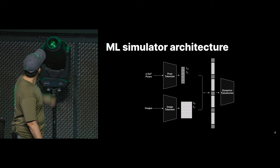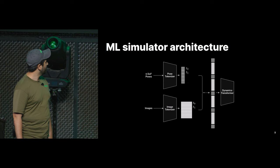So what's an ML simulator? An ML simulator has three components, and I'm going to go into each one separately: an image tokenizer, a pose tokenizer, and the dynamics transformer.